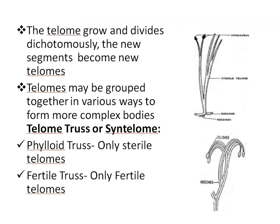Telomes grow and divide dichotomously, as shown by the dichotomous branching in the diagram. The new segments become new telomes, and the older segments below are called mesomes.